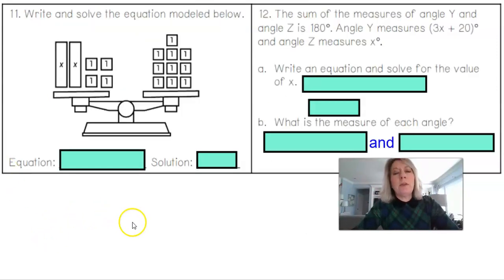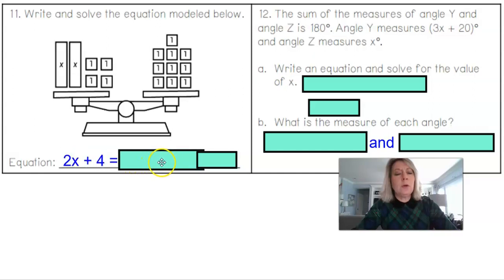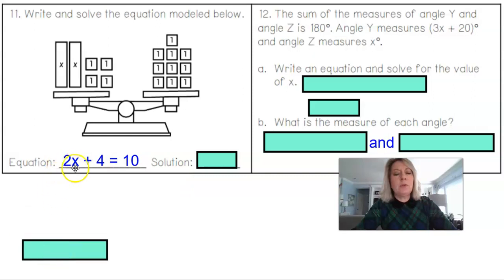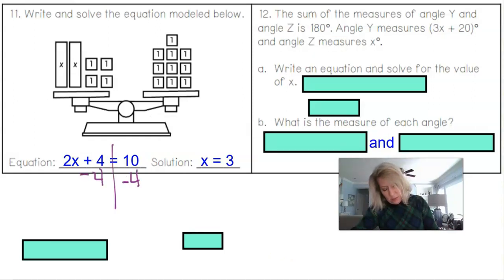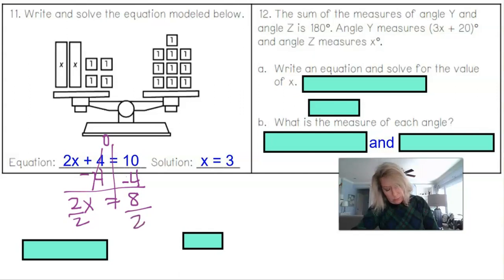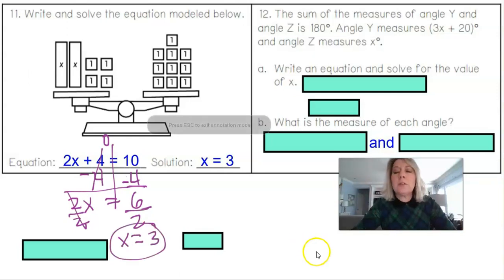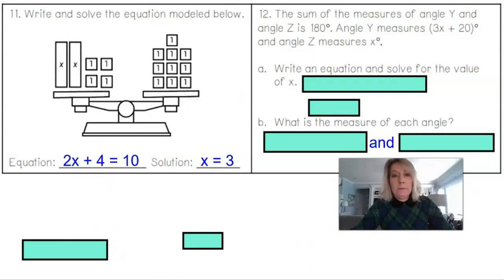Problem 11 says to write and solve the equation from the algebra tiles model. I see two x's and four 1's, so that's 2x plus 4. The balance means equal. Counting all the ones on the right side, there are 10. So 2x plus 4 equals 10. Subtract 4 from both sides: 10 minus 4 is 6. Bring down 2x, divide by 2: x equals 3. Even teachers can make arithmetic mistakes, so always double-check!